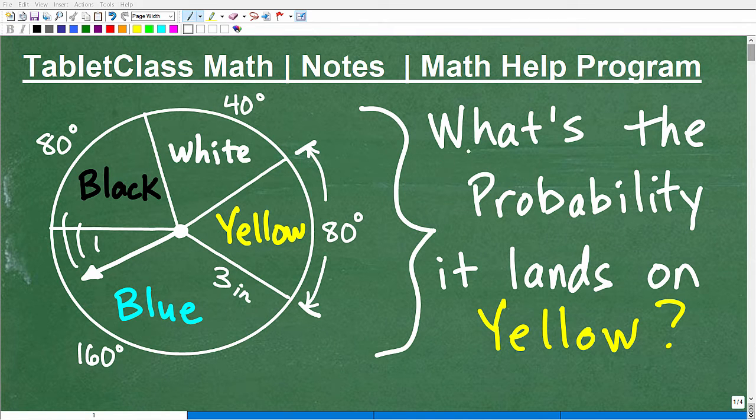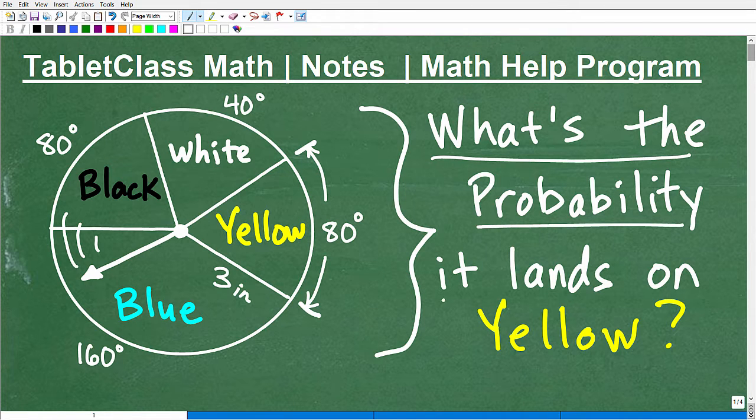Okay, let's answer the question, and that question is, what is the probability that this little spinner here lands on yellow? So what's the probability it lands on yellow?